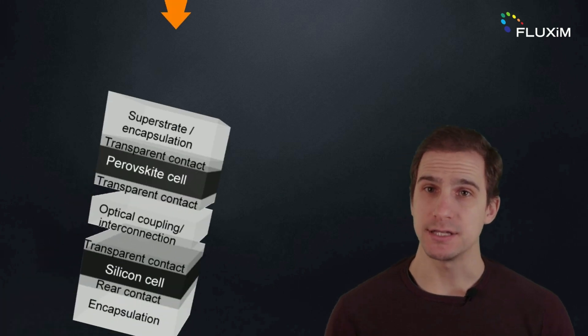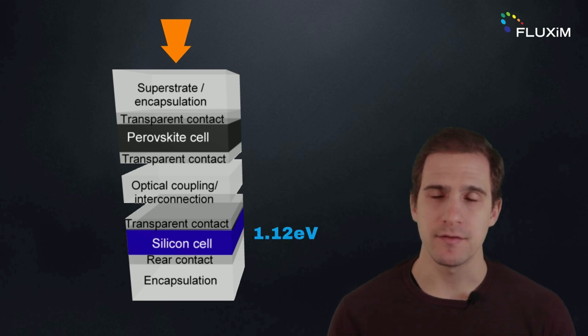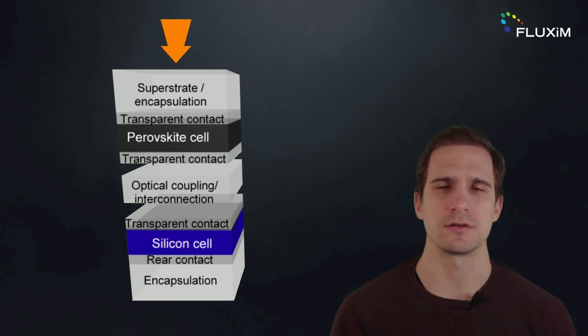The most widely studied tandem solar cells are silicon-perovskite, where silicon is the bottom subcell. Silicon has a band gap of 1.12 eV, so to maximize the efficiency the ideal band gap of the top cell should be between 1.67 and 1.75 eV.